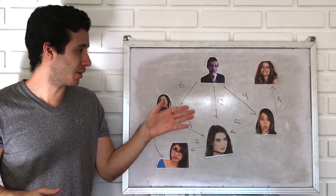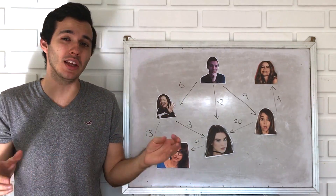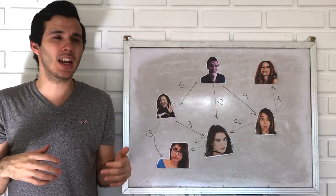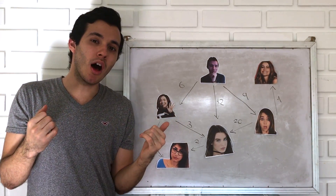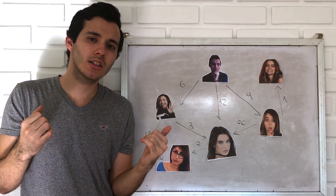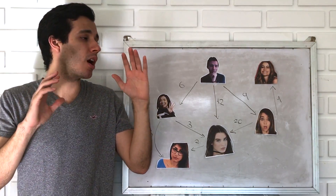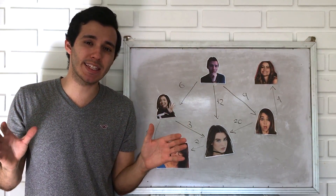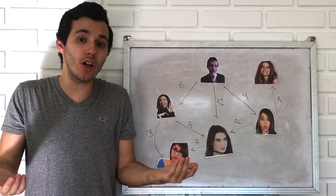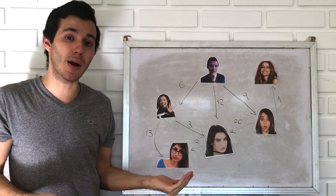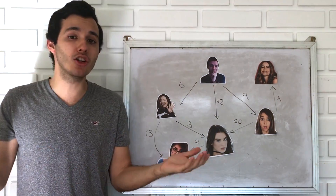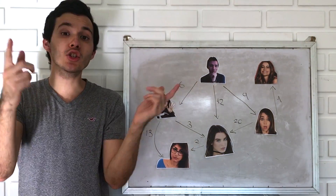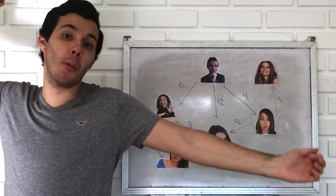Now let's pretend it is nighttime and I feel lonely and needy and I wanna go out to get some hugs. But I don't have enough gas. So I would like to know which is the shortest path that I can take to visit them all. And how do we do that? We use Dijkstra.